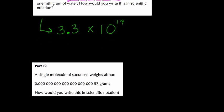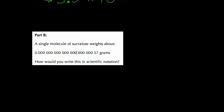Next, we're told that a single molecule of sucralose weighs this tiny amount. And the spaces between the zeros are there just to help you count. How would we write this in scientific notation? My strategy is basically the same. So here, I would put a decimal between the 5 and the 7 to make a number between 1 and 10, positive or negative.